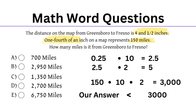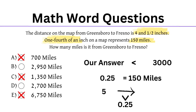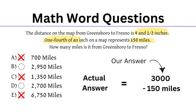Looking at our answer options, we can immediately eliminate options A, C, and E, leaving 2950 and 2700. Since we know 0.25 equals 150 miles and our estimated answer used 5, which is more than 0.25 away from the actual answer, our actual answer is more than 150 miles less than 3000. This removes option B (2950), leaving option D as our final answer.